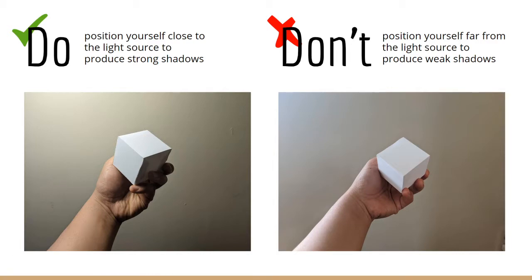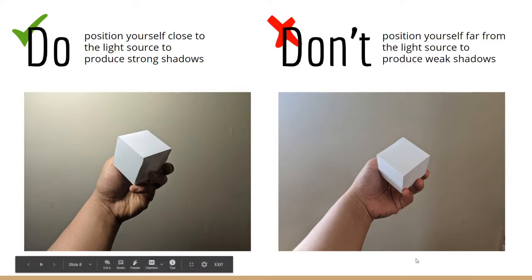Next, do position yourself close to your light source, whether it's a desk lamp or a window, so that you're producing strong shadows. What you don't want to do is position yourself far away from the light source, because that'll give you weak shadows. Notice the difference between the left and right image — the left image has really strong, very dark shadows because I'm close to that light source. In the second image I'm far from a window and the shadows are not as dark; they're in the light gray area. Trust me, it's way harder to draw with weak shadows than with dark ones. So get yourself close to that light source.